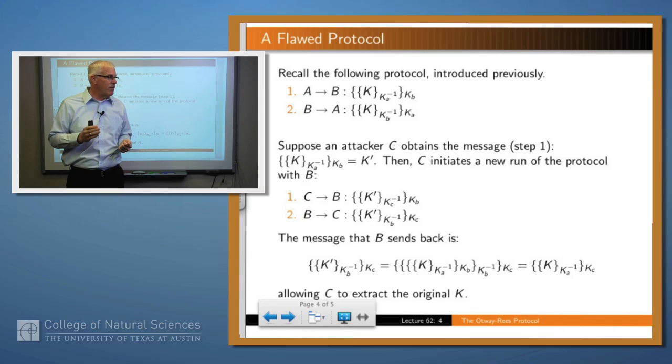So what we're left with is the original value of K encrypted with A's private key and C's public key. Assuming that C has A's public key, which is not a big assumption, then C can extract the original value of K. That's why this protocol is flawed.